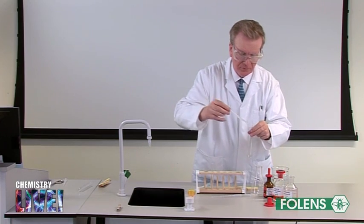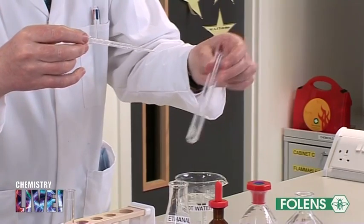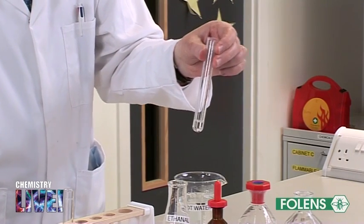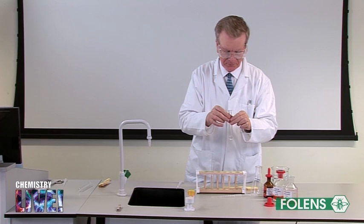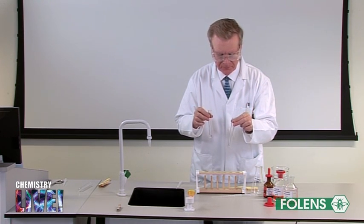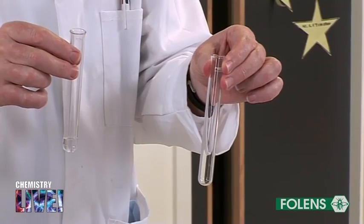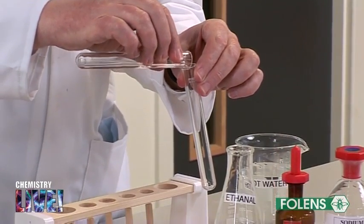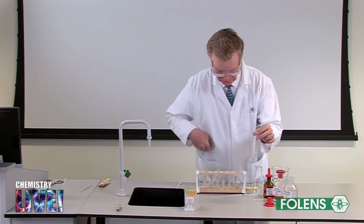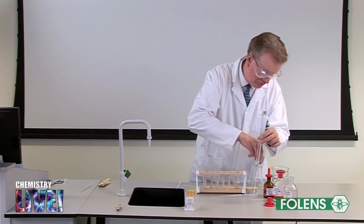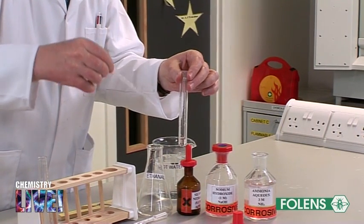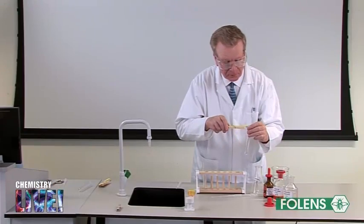You have now prepared Tollens reagent. Tollens reagent must always be freshly made up. If stored, it is likely that explosive products will be formed. Take another dry test tube that has been washed out thoroughly with detergent, rinsed with ordinary water and finally with propanone to remove any droplets of water. Pour the Tollens reagent into the clean test tube. Add about 3 drops of ethanol and using a test tube holder stand the test tube in a beaker of boiling water for a few minutes.